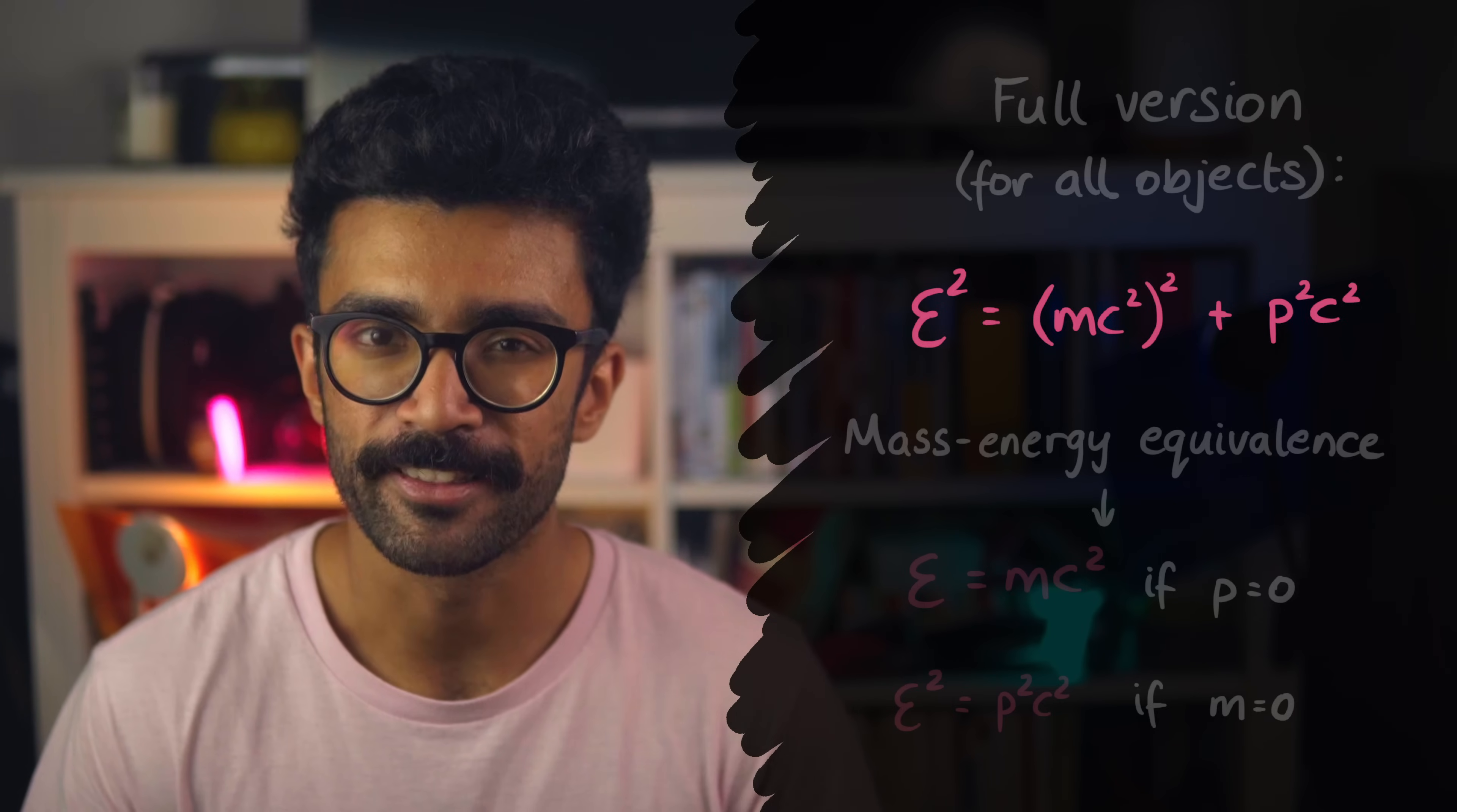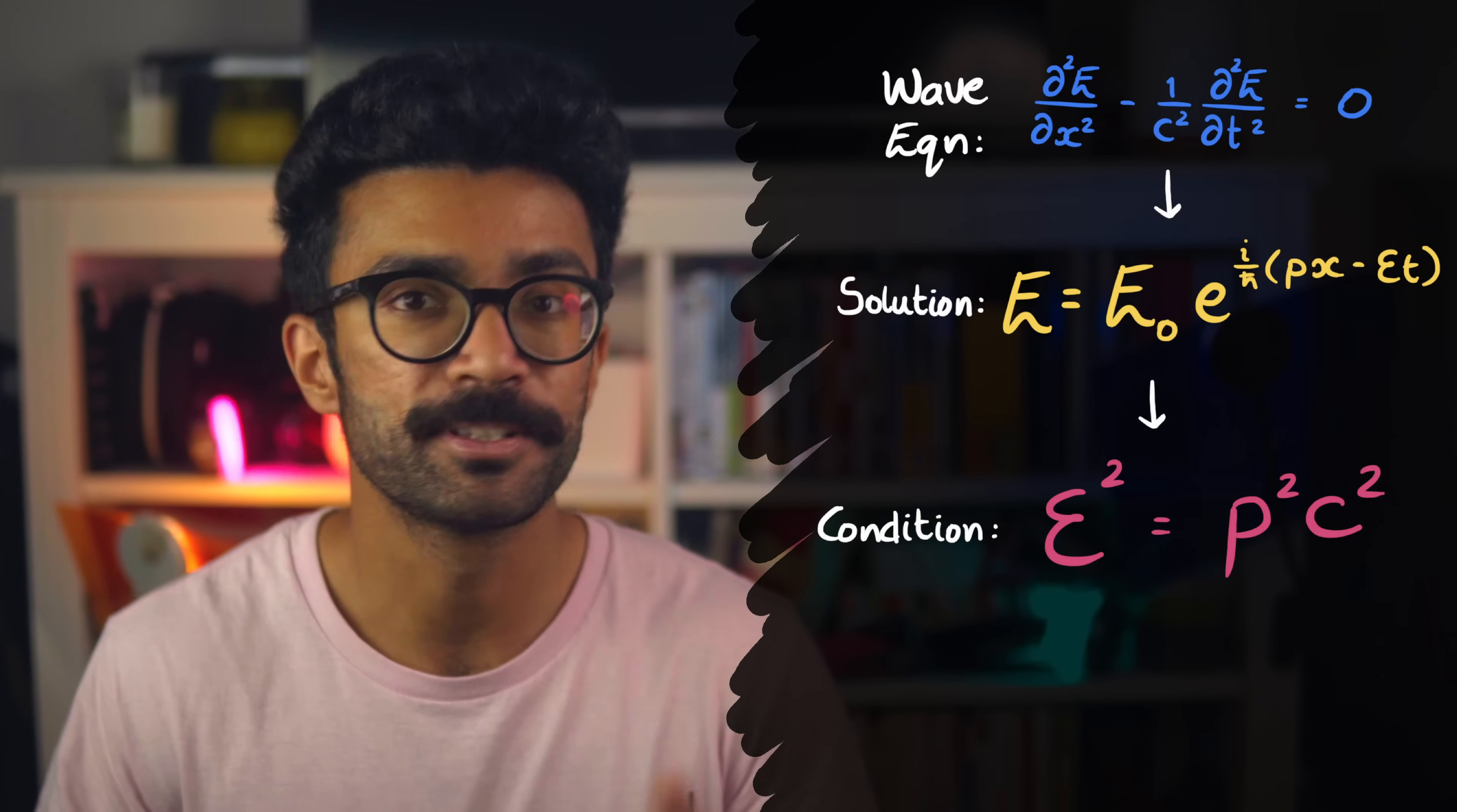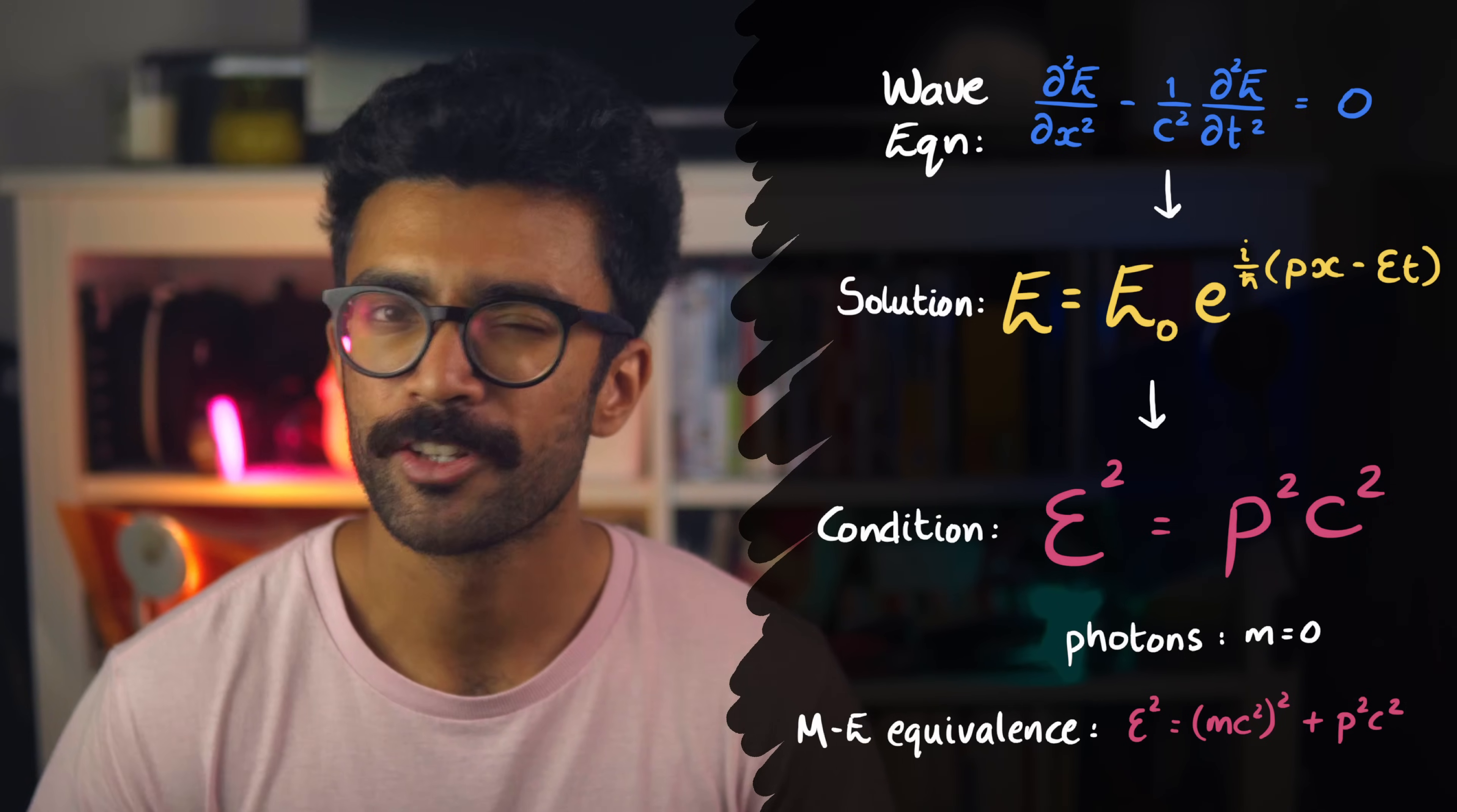So let's take a moment to think about what we've done so far. We started with a wave equation that describes electromagnetic waves, and found a common solution for it. We then realised that this solution is only truly a solution if this relationship holds. And this relationship does hold for photons, which can have momentum, but they don't have mass. This relationship here is also part of a bigger picture, which is the mass-energy equivalence relation that should apply to everything across the universe.